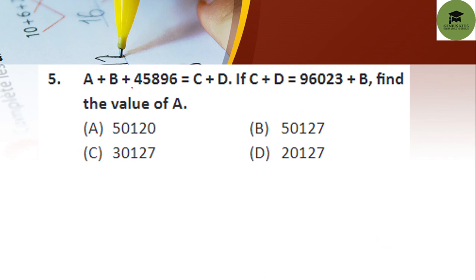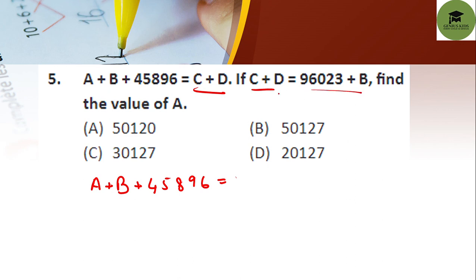Next question: A + B + 45,896 = C + D. If C + D = 96,023 + B, find the value of A. We substitute C + D with 96,023 + B in the first equation, giving us A + B + 45,896 = 96,023 + B.